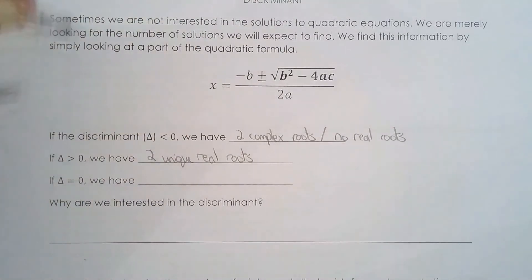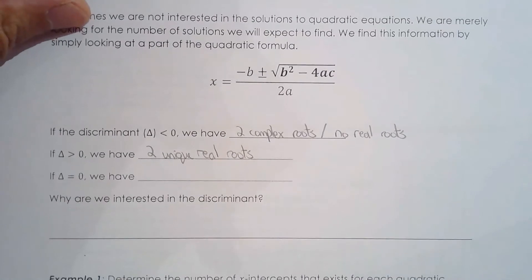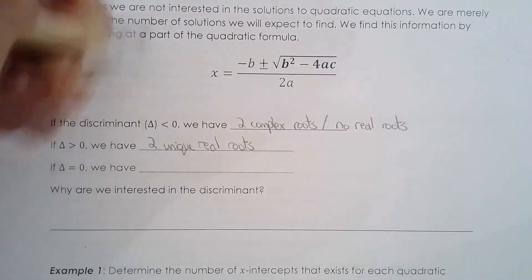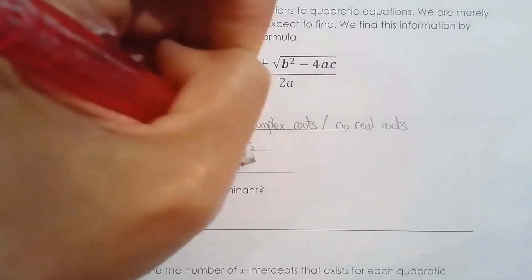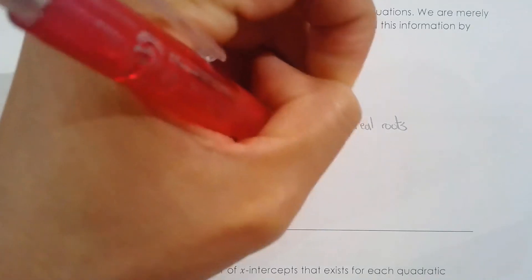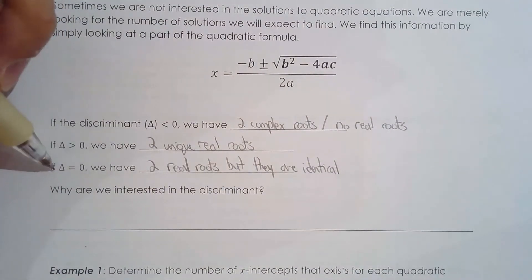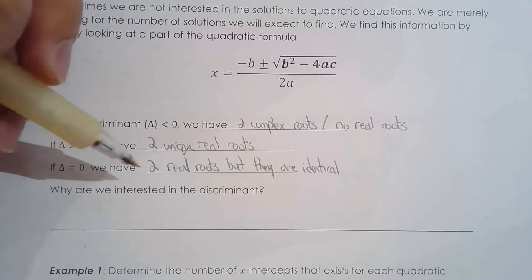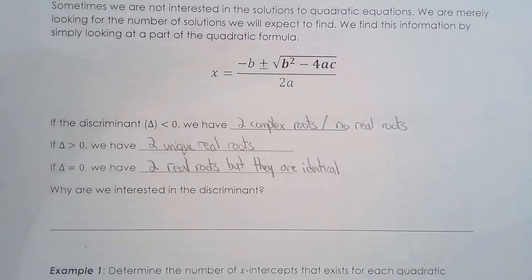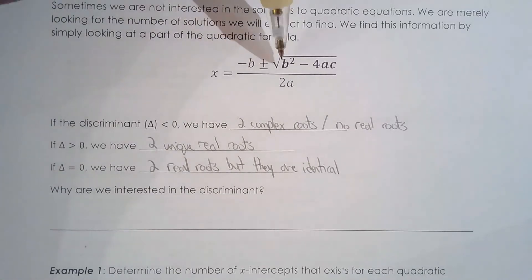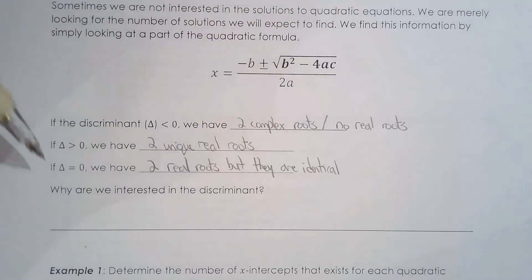Lastly, what about a discriminant of zero? You get two real roots, but they are identical. A big misconception is that students think a discriminant of zero means one real root. It's tempting, but you actually have two answers — it's just repeated, so it looks like one. If the discriminant is zero, root zero is zero, so you're left with negative b over 2a.